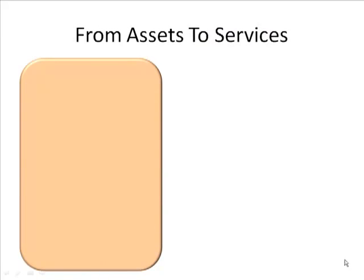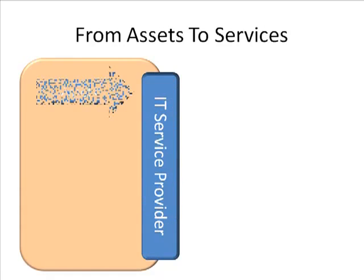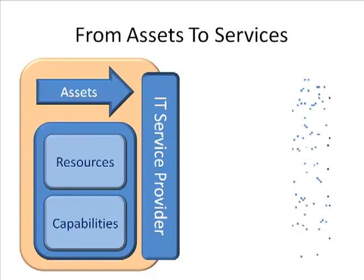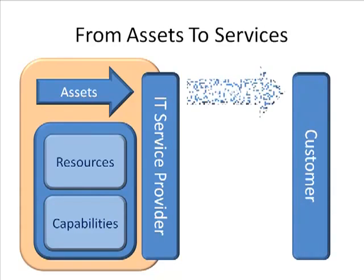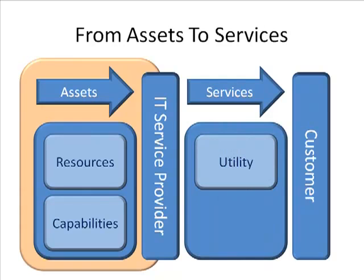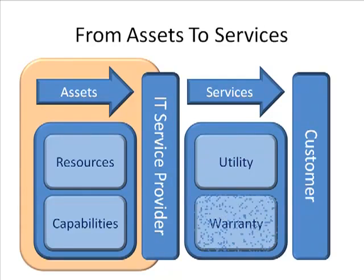Let's walk through our assets-to-services model again. As an IT service provider, we need assets — resources as stuff we own and capabilities as stuff we can do — because in the end we want to deliver services to our customers. And as part of services, we need to look at utility: are the services fit for purpose? And we need to look at warranty: are the services fit for use?